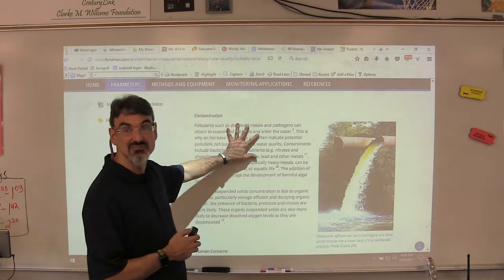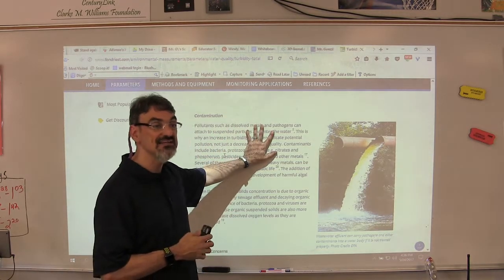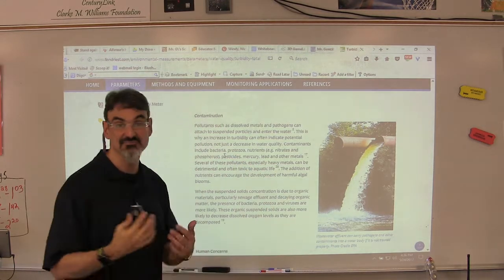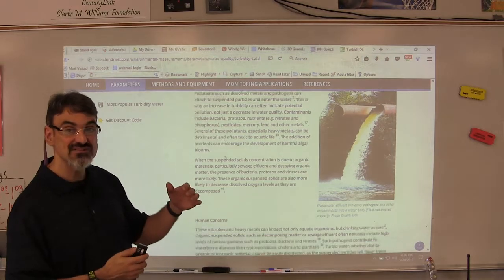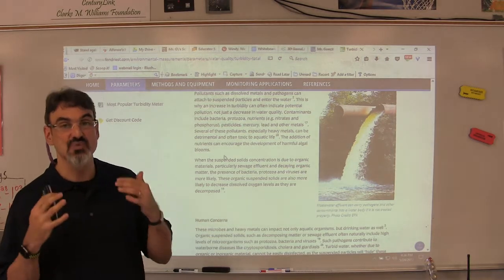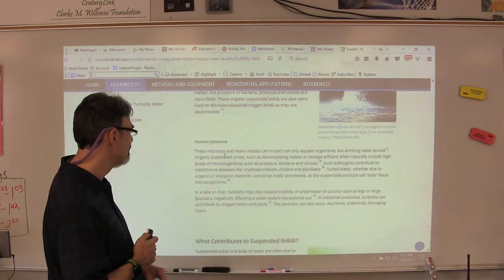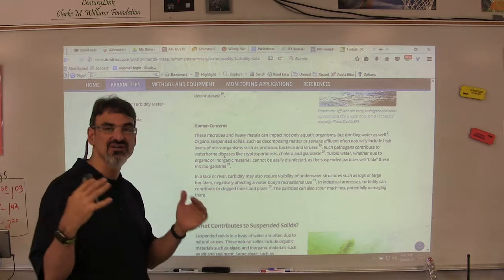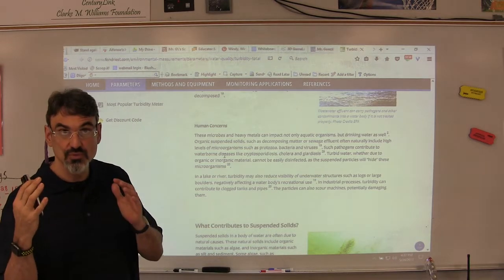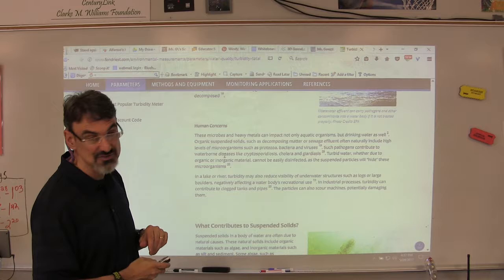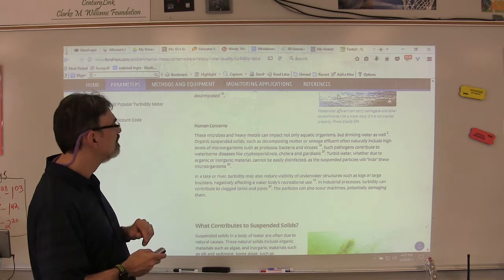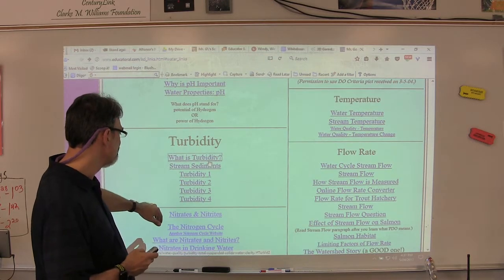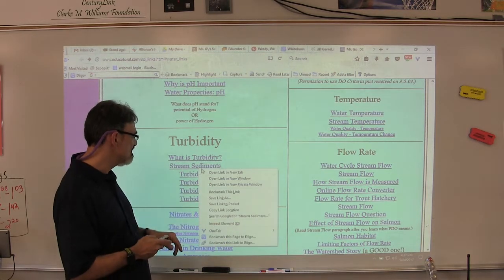Of course if the turbidity is coming from pollution then that's an important thing to catch real quick so you can tell where it's coming from and put a stop to it. So these are some important reasons why we measure turbidity every year. And then you've got a section here on human concerns so you can answer that part of your graphic organizer on Google Classroom. So up to human concerns is a good place to stop on this one and then we're going to go to stream sediments.